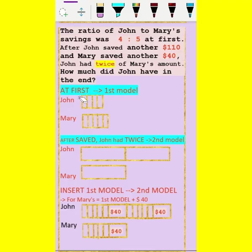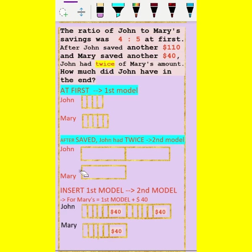This is the explanation with the bar model. John and Mary's ratio is 4 to 5 — so John has 4 units and Mary has 5 units. That is the first model. After saving, John had twice Mary's amount, so this is the second model — we draw Mary and John as twice of Mary. Now we insert the first model into the second one.